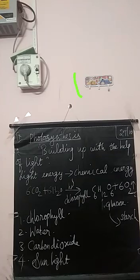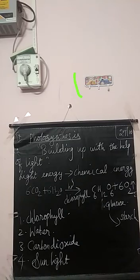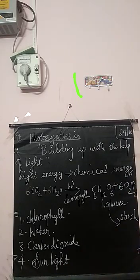Plants need carbon dioxide for their photosynthesis process. For respiration — cellular respiration — plants also need oxygen. So plants need carbon dioxide for photosynthesis and oxygen for their cellular respiration. After the photosynthesis process, we get glucose, and this glucose is converted into starch.